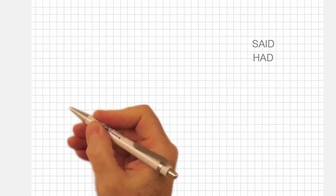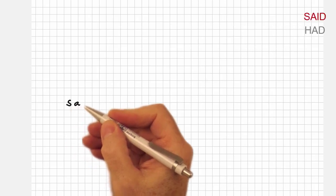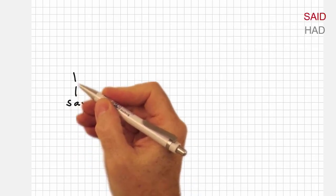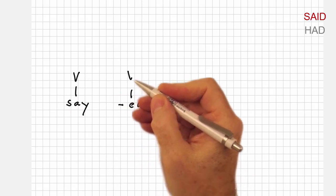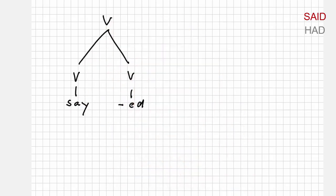Let's analyze two verb forms and start with said, whose base form is of course say, and that's a verb. To this verb we add the verbal affix -ed, so the whole word remains a verb.